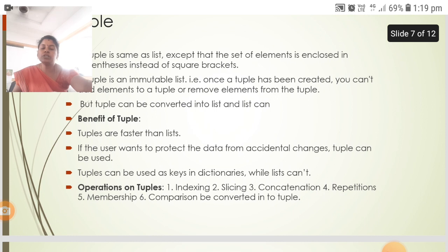Benefits of tuples: Tuples are faster than lists. If the user wants to protect the data from accidental changes, tuples can be used. Tuples can be used as keys in dictionaries, while lists cannot.